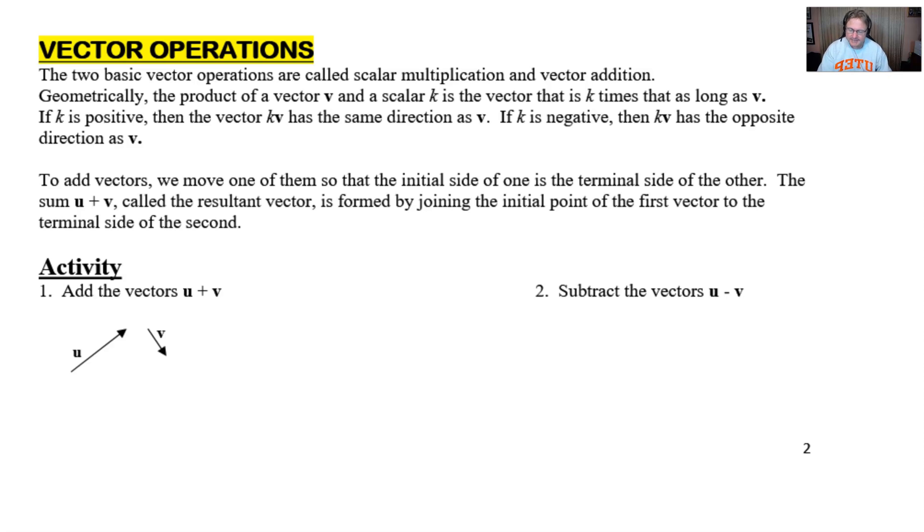The two basic vector operations that we typically see through application problems are scalar multiplication and vector addition. Geometrically, the product of a vector v and a scalar k is simply the vector that's k times as long as the vector v.